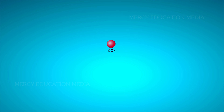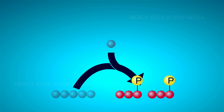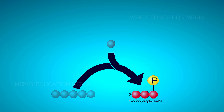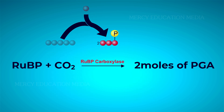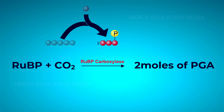The acceptor molecule of carbon dioxide is a 5C compound called ribulose-1,5-bisphosphate, i.e. RuBP. The resulting 6C compound is highly unstable and gets cleaved to form 2 molecules of 3C compounds called phosphoglyceric acid, i.e. PGA. RuBP plus carbon dioxide in the presence of RuBP carboxylase forms 2 moles of phosphoglyceric acid (PGA).